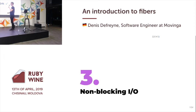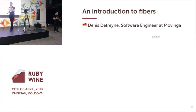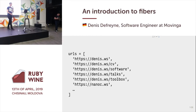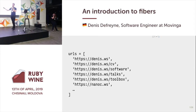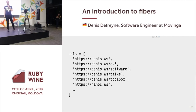My third example is non-blocking I/O, which is by far the biggest example. I'll build a very simple link checker: I'll have a list of URLs, and for each URL make an HTTP request and check the response code. If the response is 200, great; otherwise, not so great. I have three versions of the implementation.